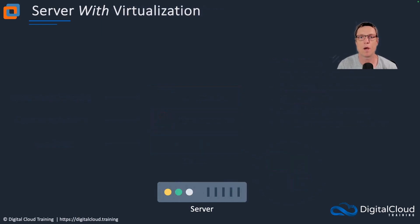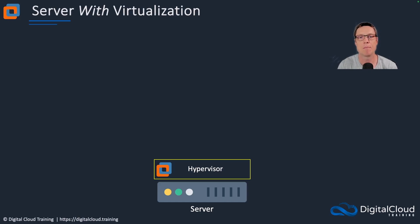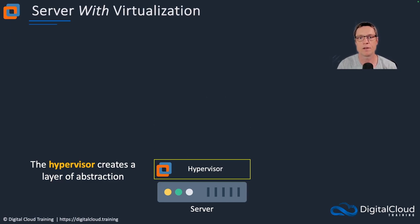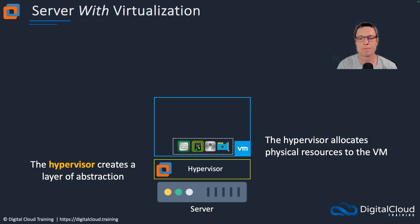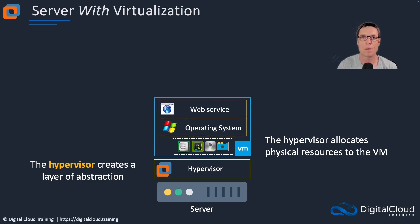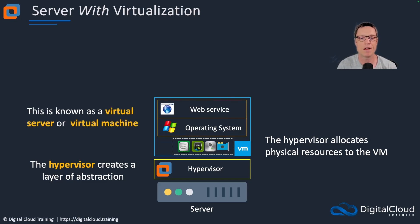Then we move to a model where we have a virtualization layer called a hypervisor. We have our physical server and then the hypervisor software on top — for example VMware, Xen, KVM, or Microsoft Hyper-V. The hypervisor creates a layer of abstraction between the physical server and what runs on top, which is a virtual server, also known as a virtual machine. The hypervisor allocates or emulates the physical resources to the virtual machine, so the VM gets a subset of available resources. We can have an operating system and an application layer within that virtual machine.